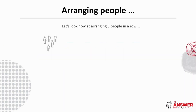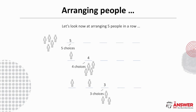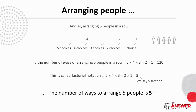What about arranging people? Let's start by looking at arranging five people in a row. Here we have our five people and our five slots. We have five people to choose from to fill the first slot, then four people left to choose from to fill the second slot, then three people to choose from to fill the third slot, and so on. So arranging five people in a row, we have five choices for the first slot, four for the second, three for the third, two for the fourth, and one for the fifth. The number of ways of arranging five people in a row is five times four times three times two times one.